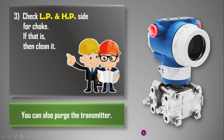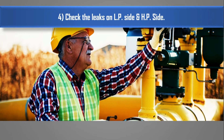To purge the transmitter, we will use the drain points — loosen the drains carefully. Be careful: if the drains are loose, the transmitter will not work properly. These drain points are a very important part of the transmitter. The fourth step is to check for leaks on the LP side and the HP side.